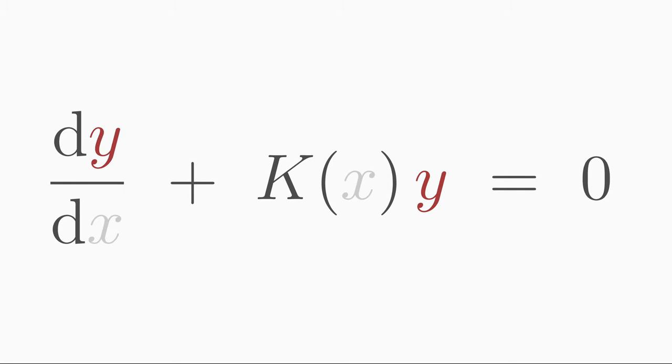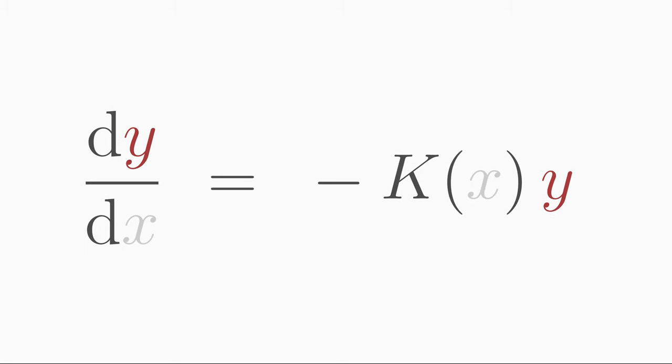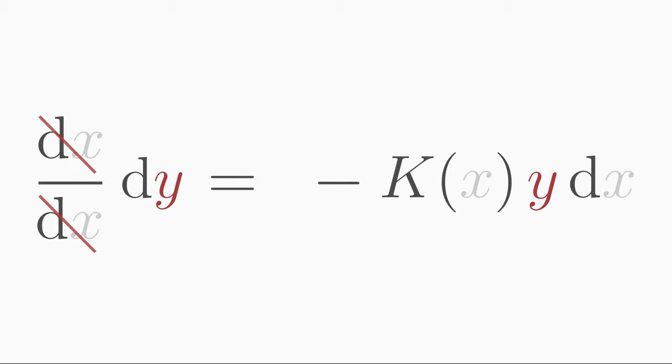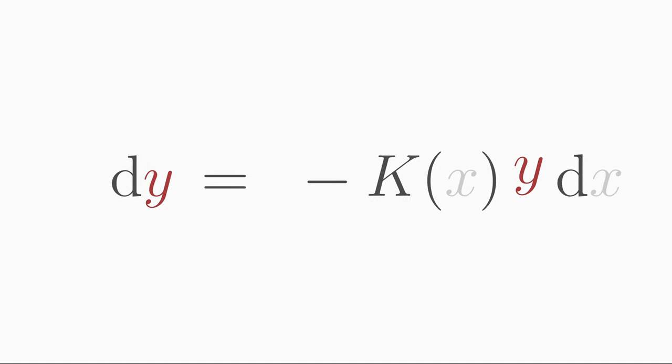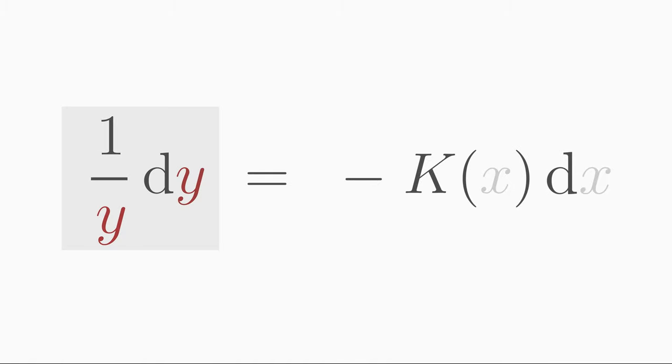Bring k times y to the right-hand side. Multiply the equation by dx and then divide the equation by y. This way you have only y dependence on the left side and only x dependence on the right side. Now you can integrate over y on the left-hand side and over x on the right-hand side.